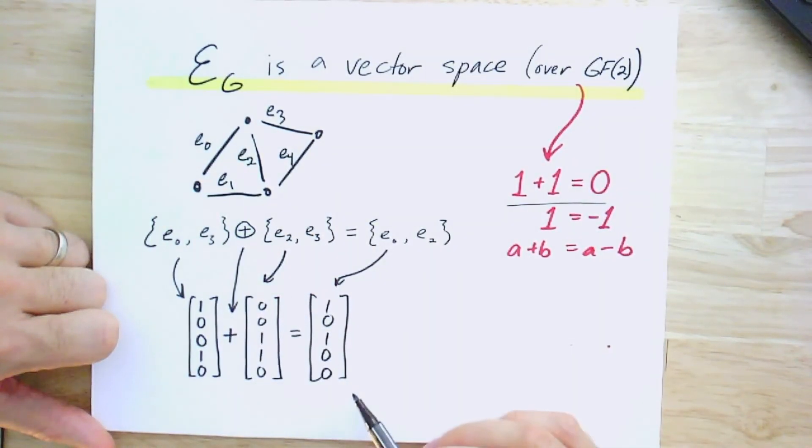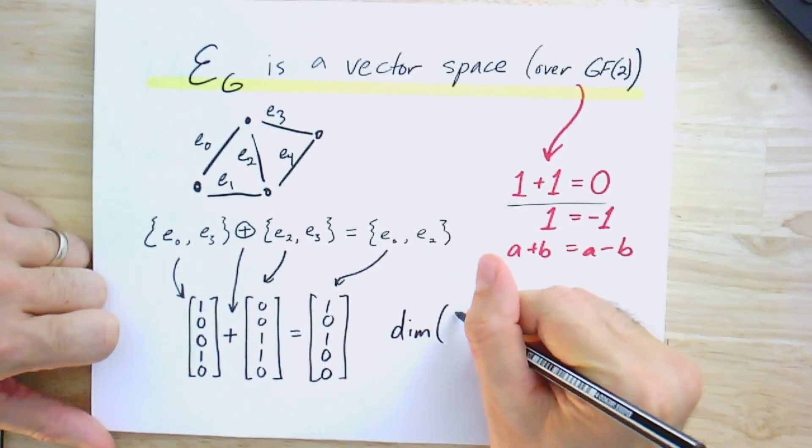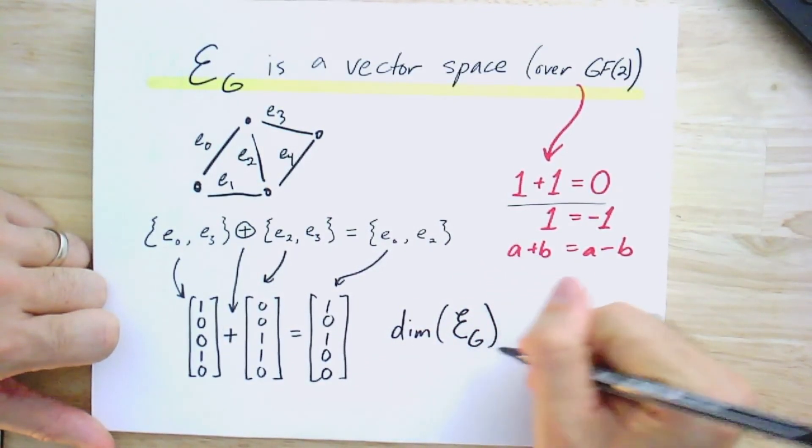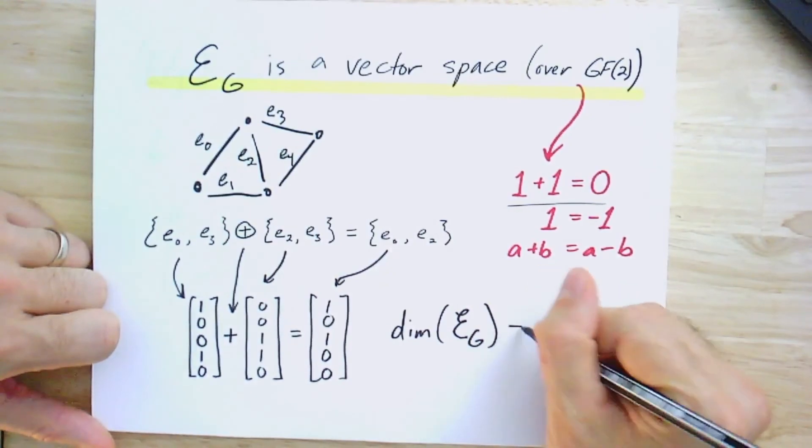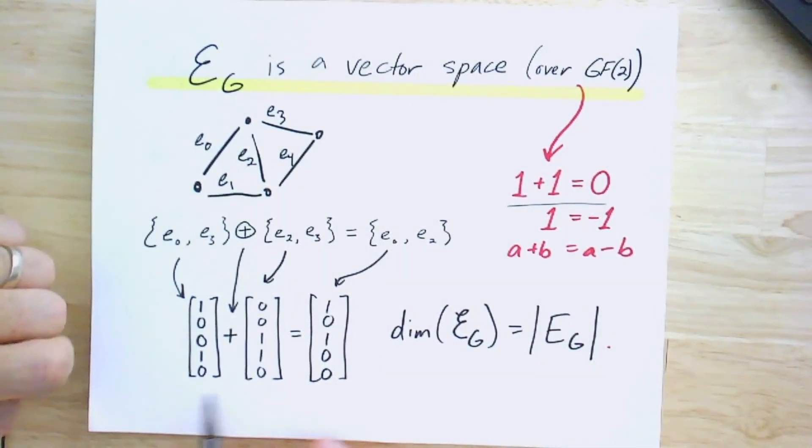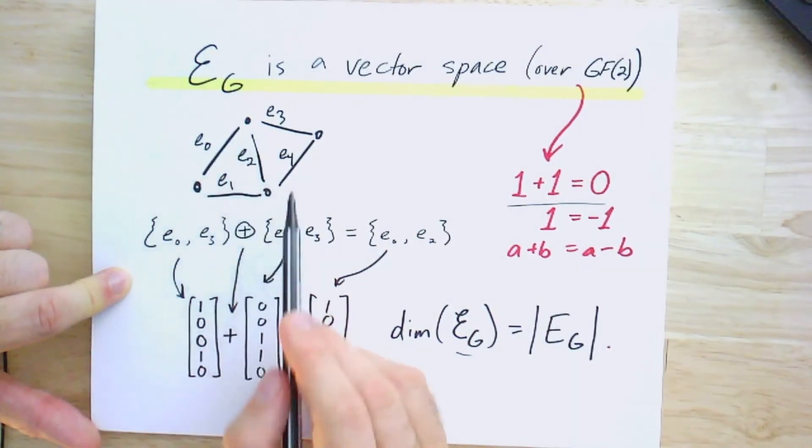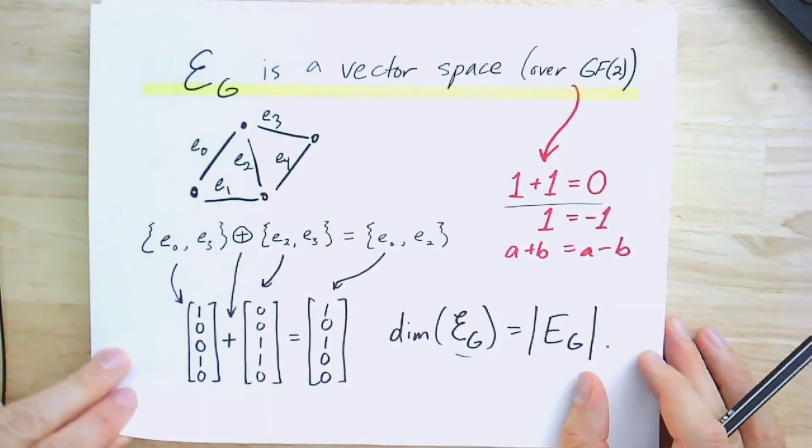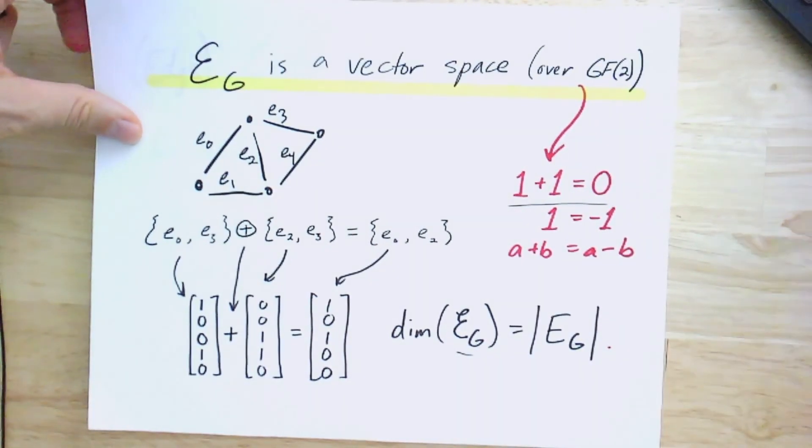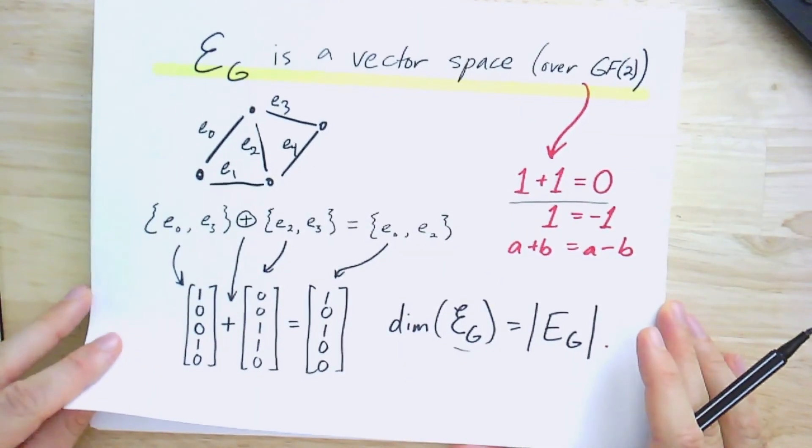So the dimension, as I said, of this vector space, EG, is just equal to the cardinality of the edge set. And that's, again, pretty clear because we wrote a basis for this space where each edge was a basis element, and that would just be the standard basis. So that's the edge space as a vector space over GF(2).